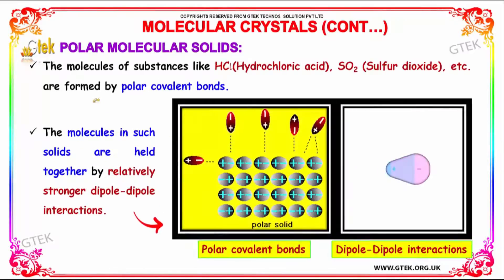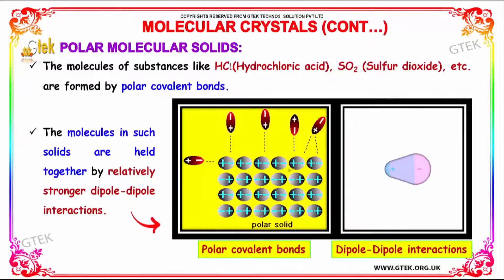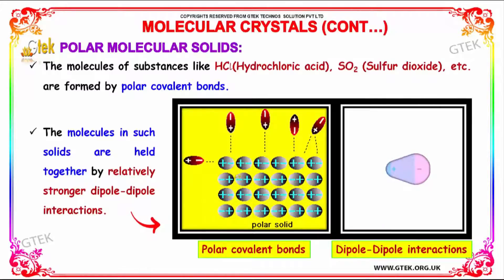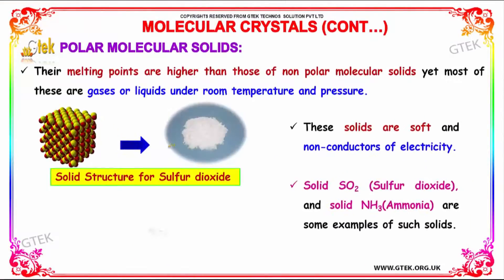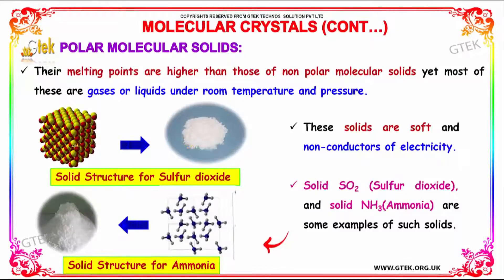Polar molecular solids: the molecules of substances like HCl (hydrochloric acid) and sulfur dioxide are formed by polar covalent bonds. The molecules in such solids are held together by relatively strong dipole interactions. Their melting points are higher than those of non-polar molecular solids. Most of these are gases or solids under room temperature and pressure. Here is the solid structure of sulfur dioxide and the solid structure of ammonia.